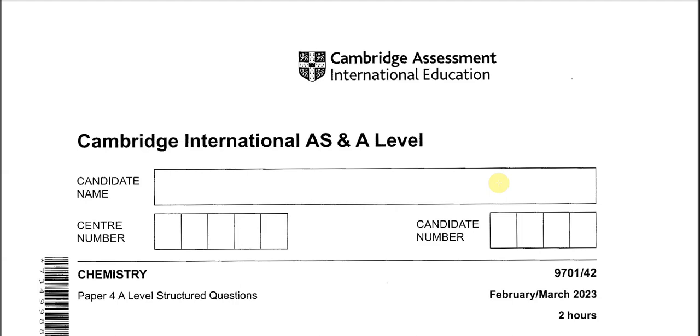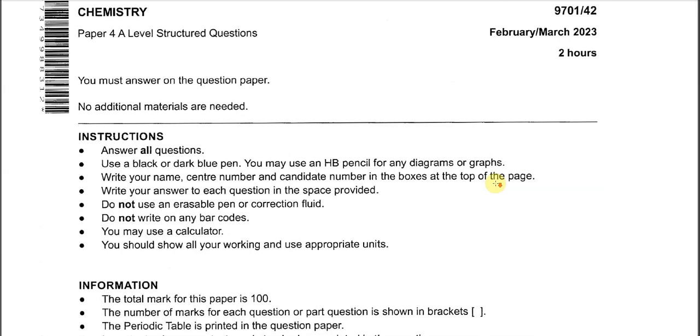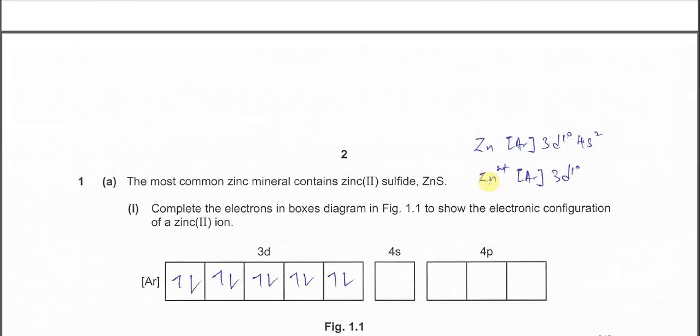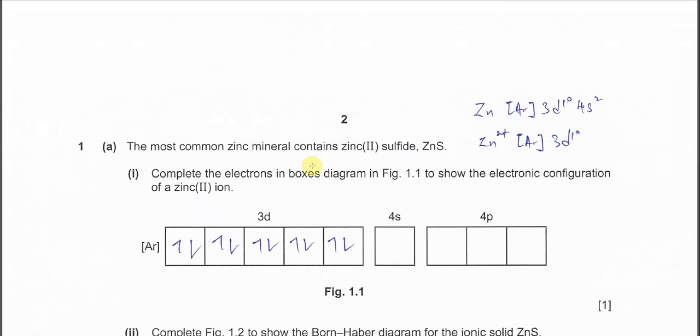February March 2023 paper 4 variant 2 question 1 part A. The most common zinc mineral contains zinc(II) sulfide. Part (i): complete the electrons in boxes diagram in figure 1.1 to show the electronic configuration of a zinc 2+ ion.